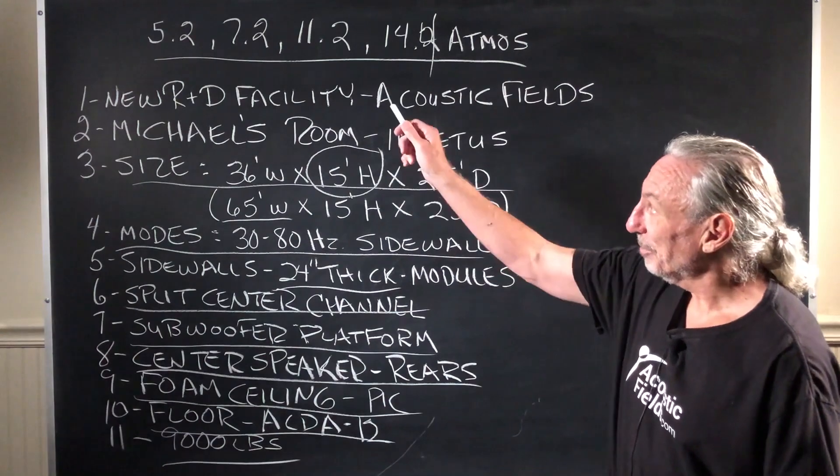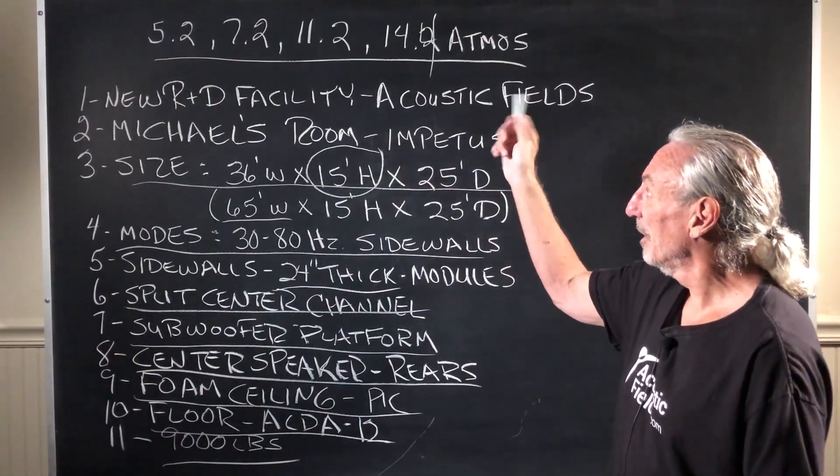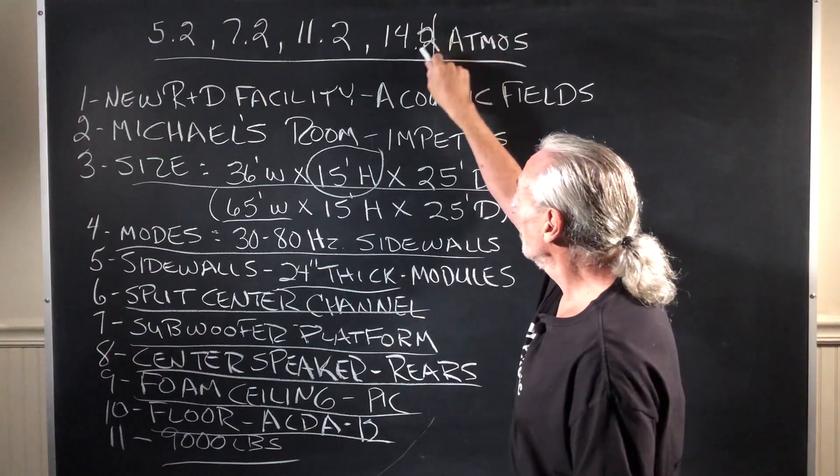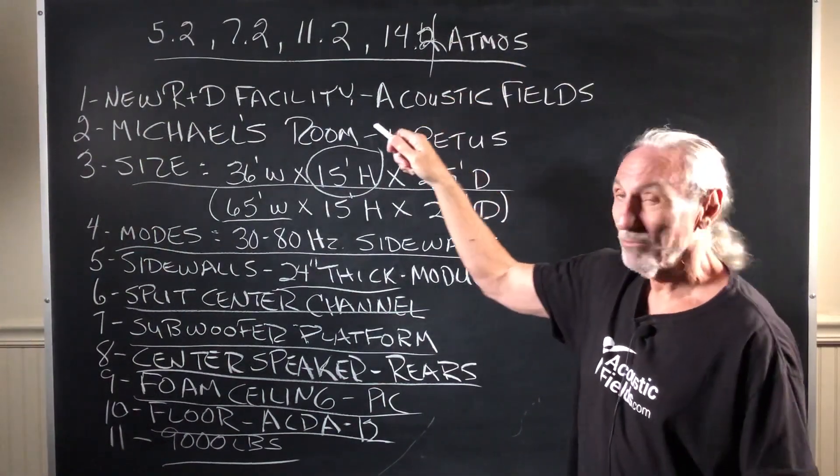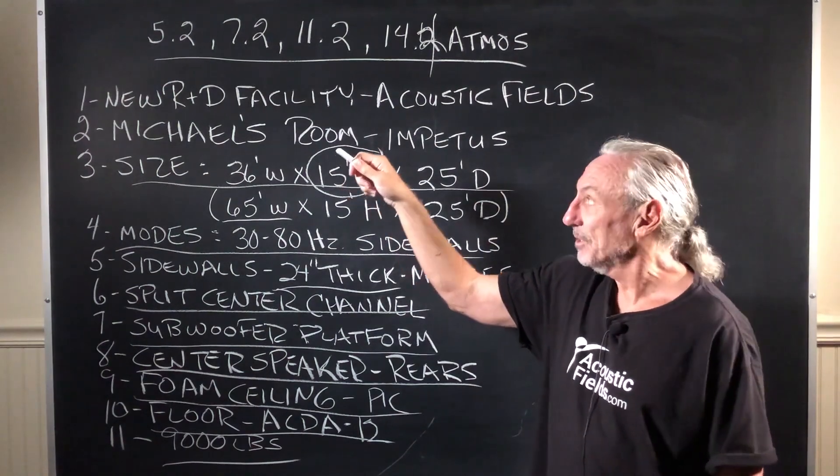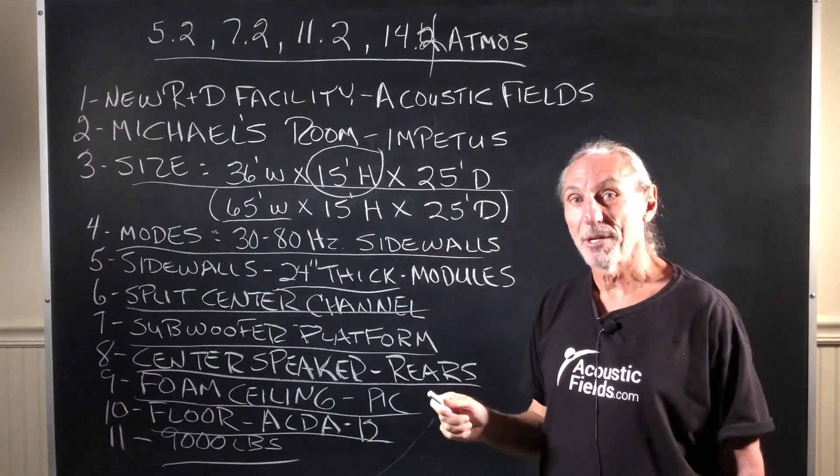But anyway, multiple channel facility: 5-2, 7-2, 11-2, 14-2. Probably going to do 14-2 to start and then maybe 14-4 to add some more low frequency energy to the room. But it's a multiple channel facility.